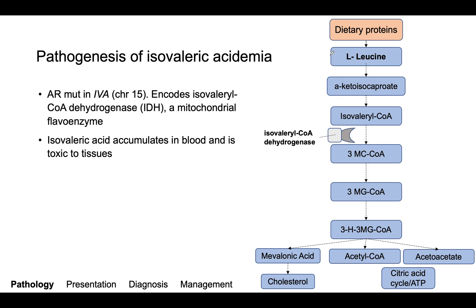As far as the pathogenesis is concerned, dietary proteins, which include leucine — an amino acid — are catabolized into acetyl-CoA and acetoacetate, which then feed into the citric acid cycle to help us make ATP.